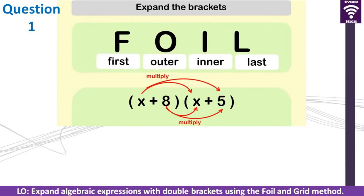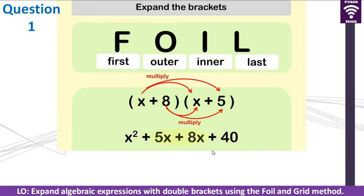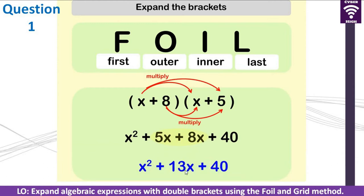Let us look at the first question. We will be using the FOIL method to expand the brackets. Multiplying the First: X times X gives us X squared. The Outer: X times 5 gives us 5X. The Inner: 8 times X gives us 8X. Finally, 8 times 5 gives us 40. So we now have X squared plus 5X plus 8X plus 40. We simplify 5X plus 8X, and we get X squared plus 13X plus 40. That will be our final answer.